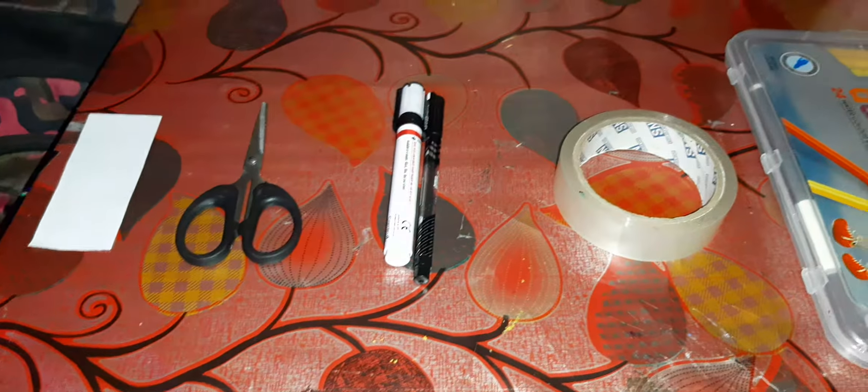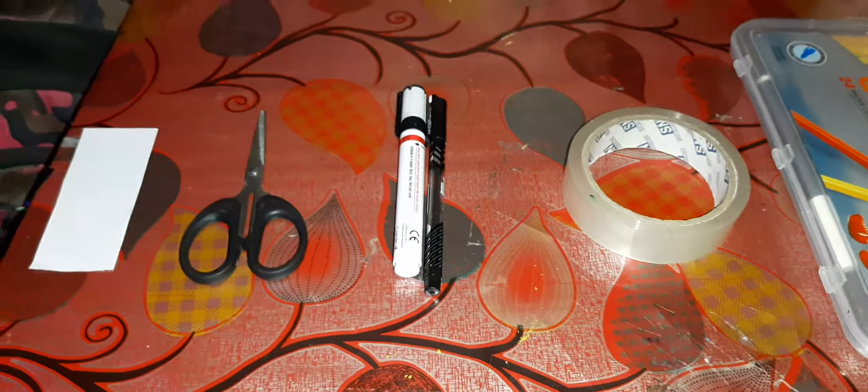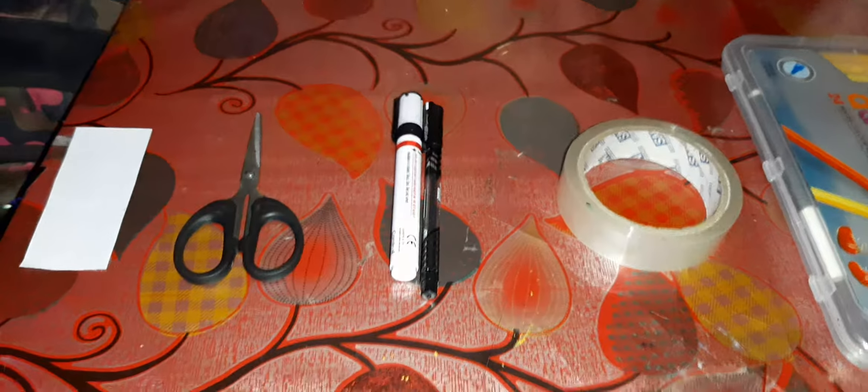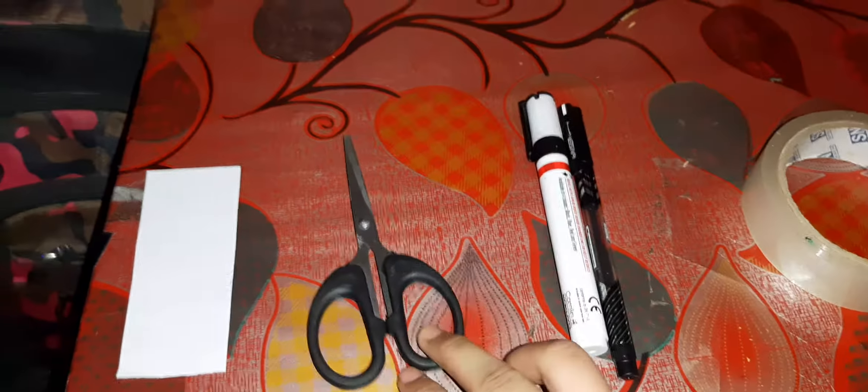Hello guys, welcome to my channel. Today we are going to make homemade stickers, so let's get started. You can see the materials for stickers: a white paper, scissors, a black pen, and a marker.